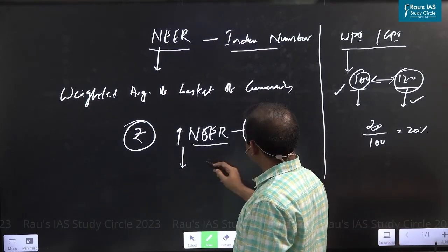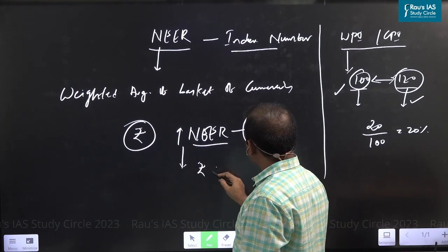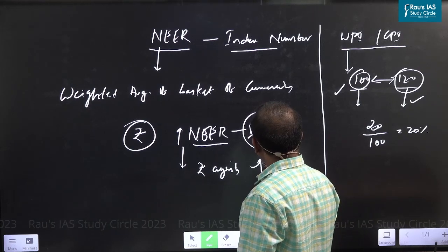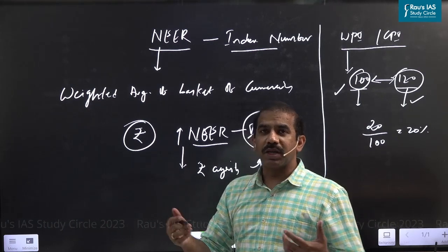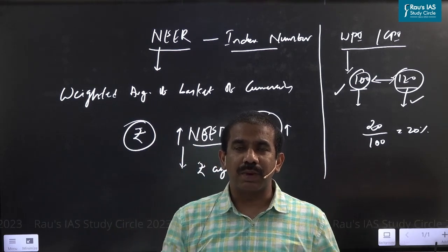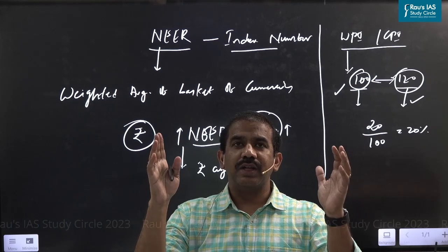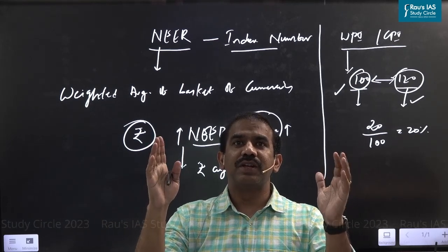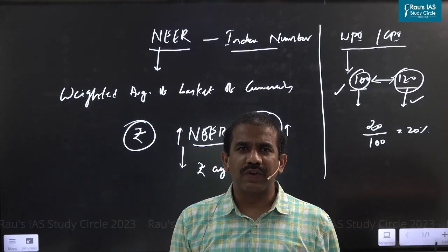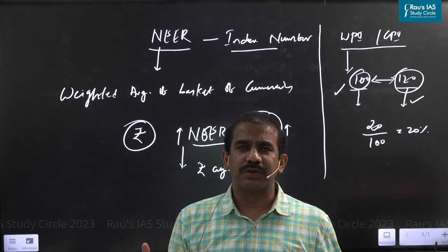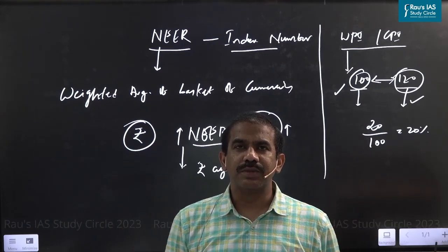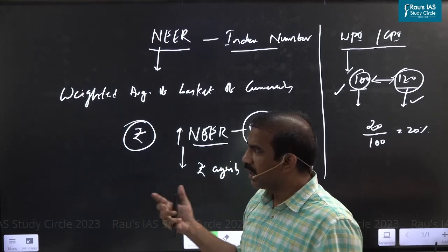When the NEER index number is increasing, it means my rupee against a basket of currencies is gaining value — I could say the rupee is becoming relatively stronger against that basket of currencies. This basket is a weighted average, and a weighted average is one of the simplest index number computations. That's what NEER conveys.